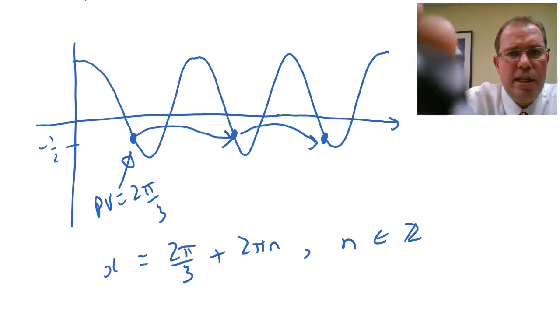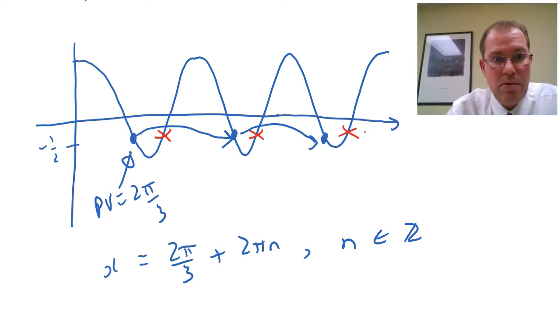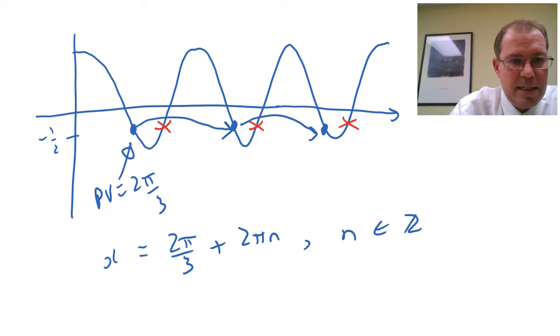But unfortunately, we're missing lots of numbers. We're missing the one going up the roller coaster, aren't we? We've got all the ones going down the roller coaster, but we haven't got them going up the roller coaster. So we need to get at that one.